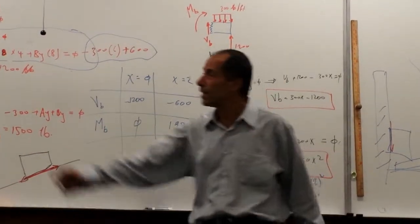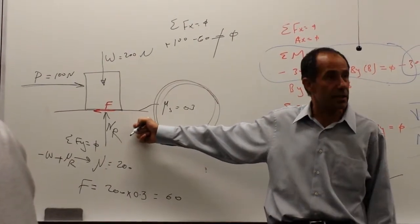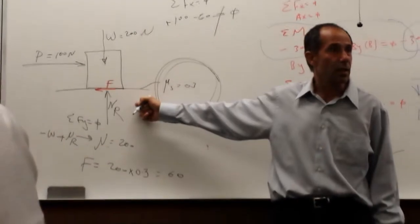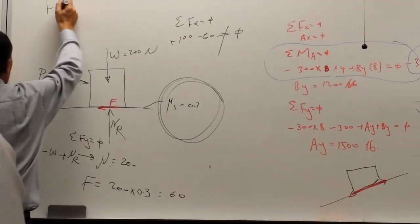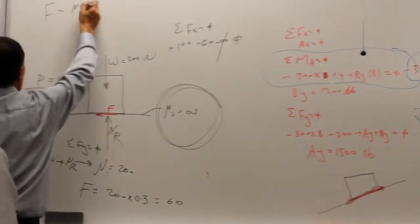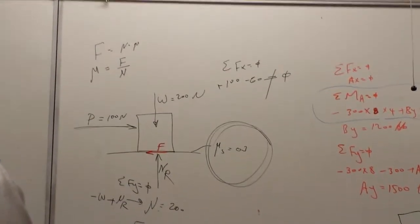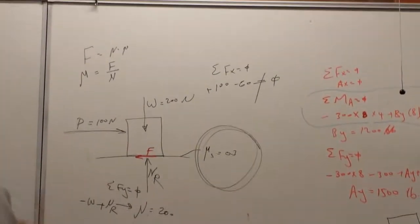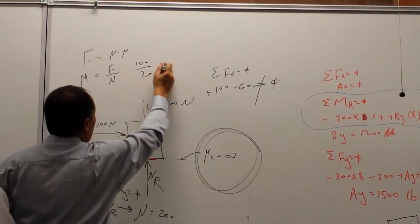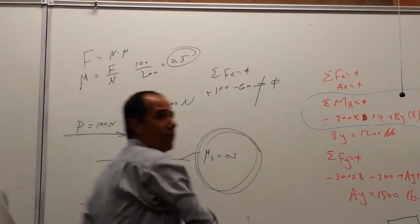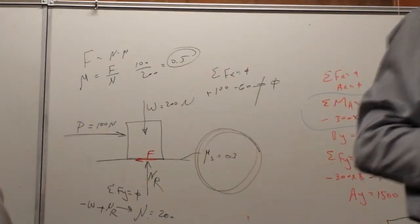So if I look at it in order to have a force of 100, I get an equilibrium. And we set the F equal to N times mu, or mu equal F over N. If I have F of 100 and N of 200, then I need 0.5 friction. Make sense?